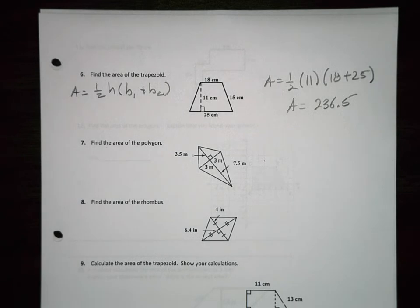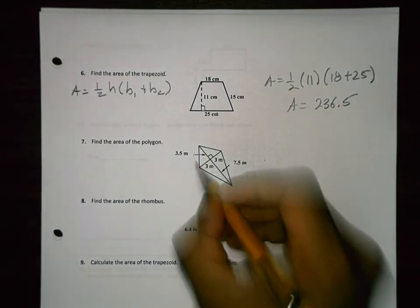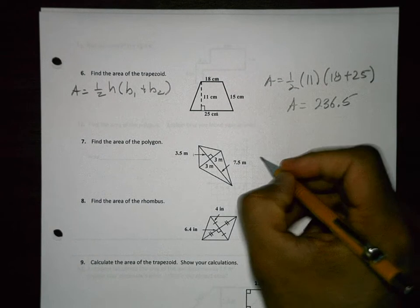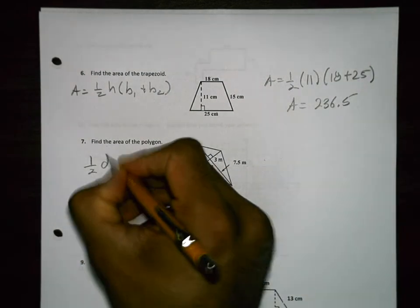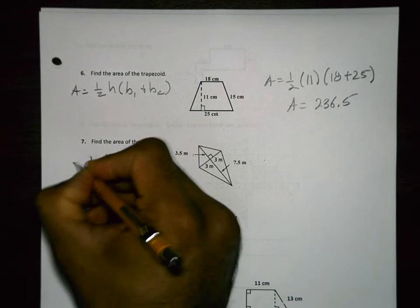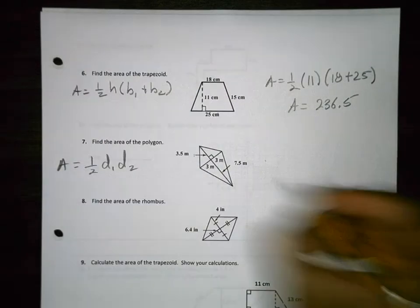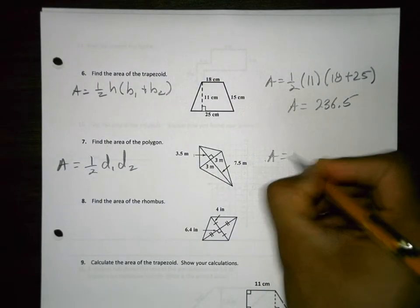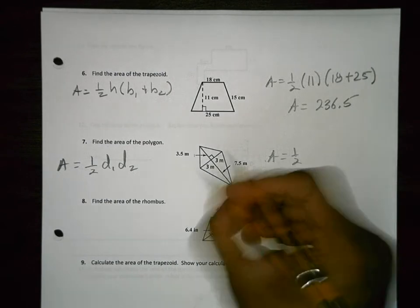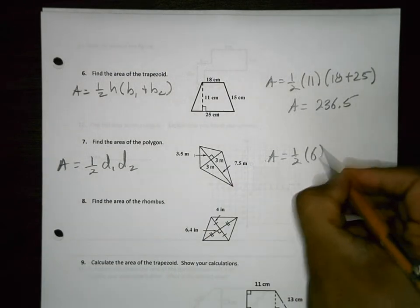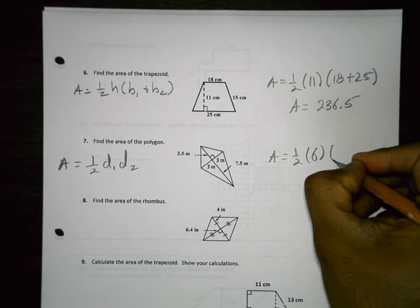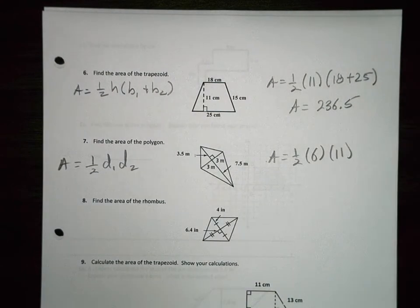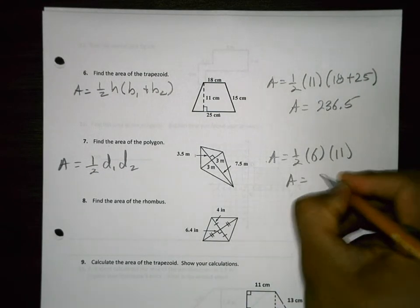Find the area of the polygon. So this thing is a kite. I got a perpendicular intersection here. So that's 1/2 diagonal 1 times diagonal 2. Just be careful that this diagonal is 6, it's the whole thing. This piece is 3. So this one here is 11. So the area should equal 33.